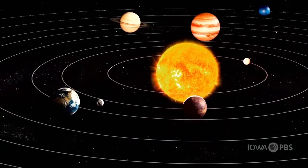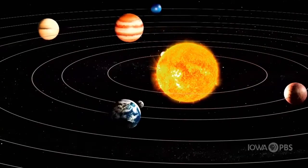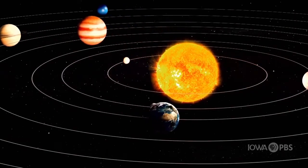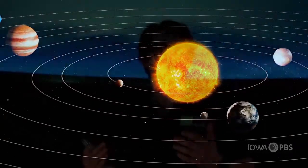But of course, it doesn't stay in the same spot. Stuff in outer space is moving all the time. The Earth orbits the sun along with all of the other sun's planets. The sun flies around the center of our galaxy, and our galaxy flies through outer space.